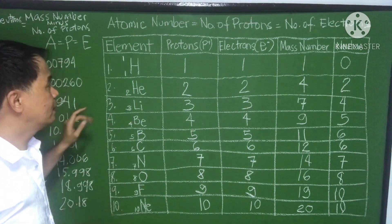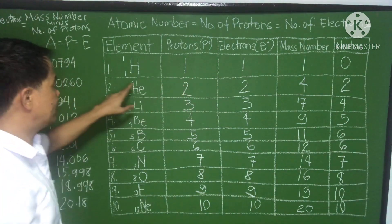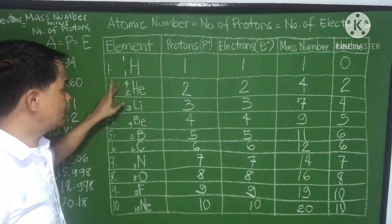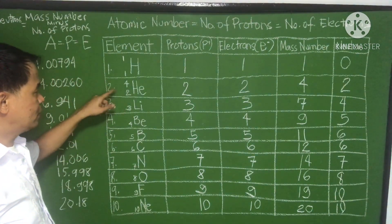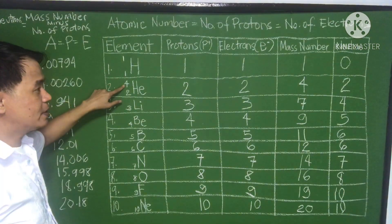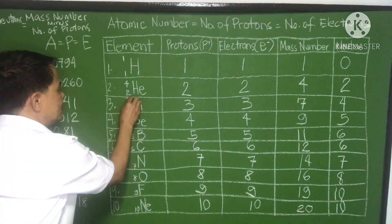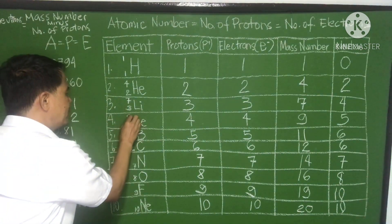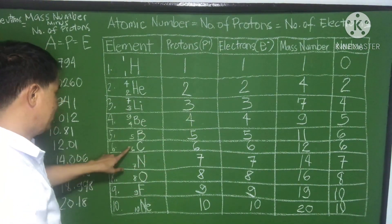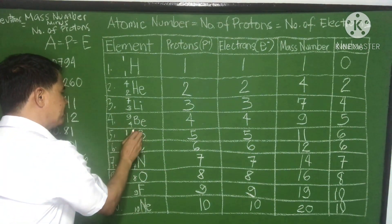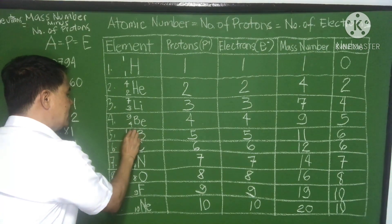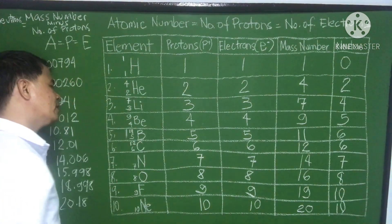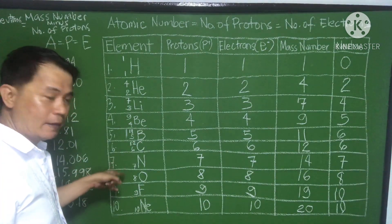I just forgot to write the mass number on top of the element symbol. Because you will be dealing with this a lot, you must be used to it. The atomic number is written below and the mass number is on top.